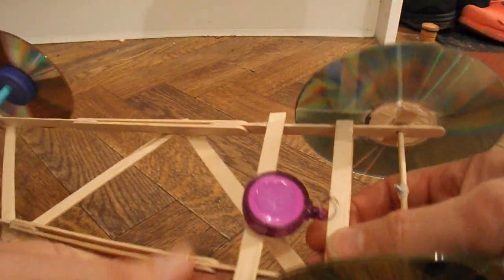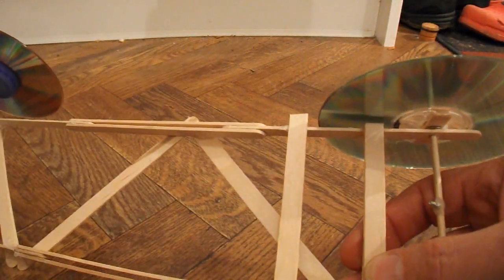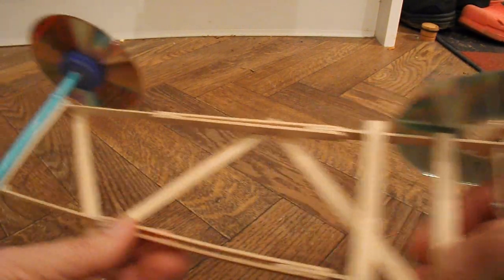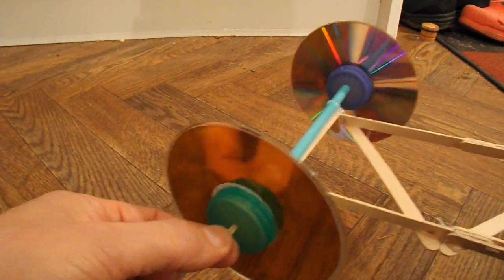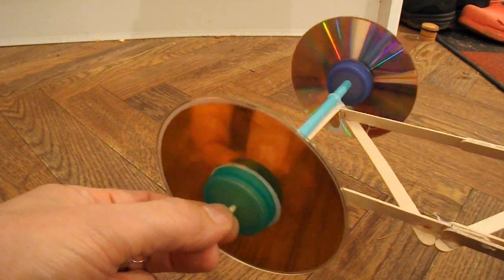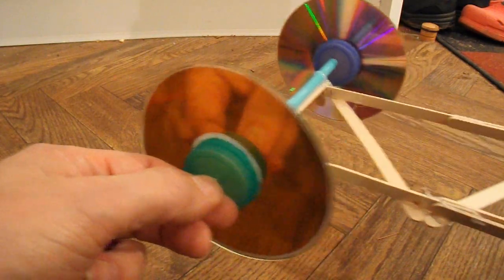So all I've done is use one of my existing cars. This one's made out of popsicle sticks. Got barbecue skewers as the axles. CDs as the wheels. Plastic bottle tops for the hubs.